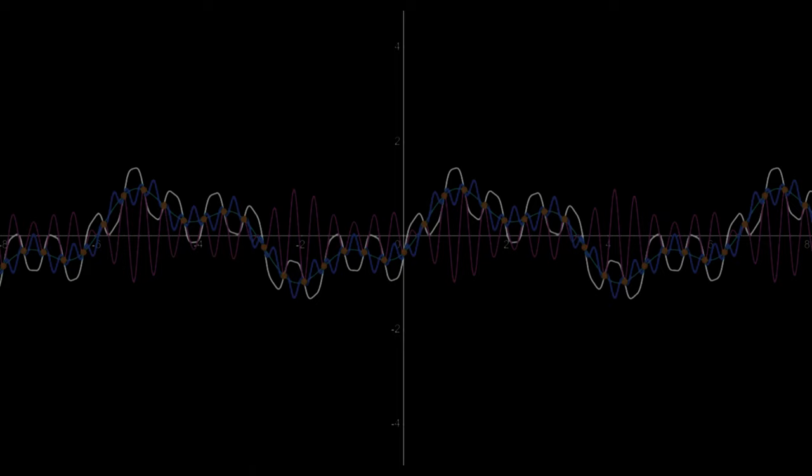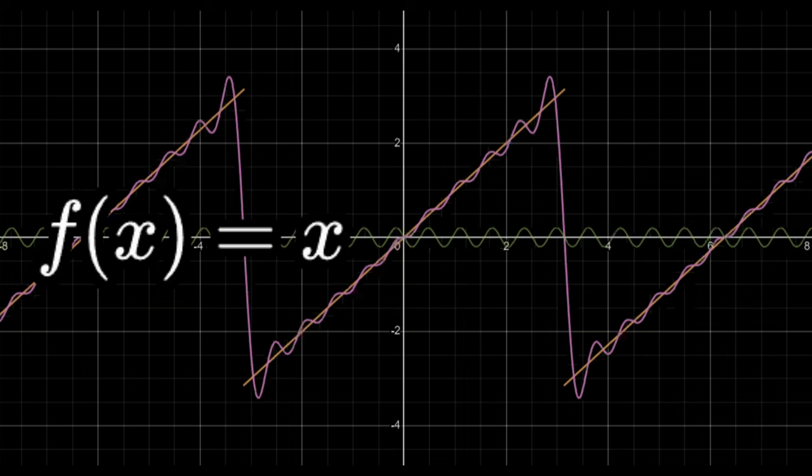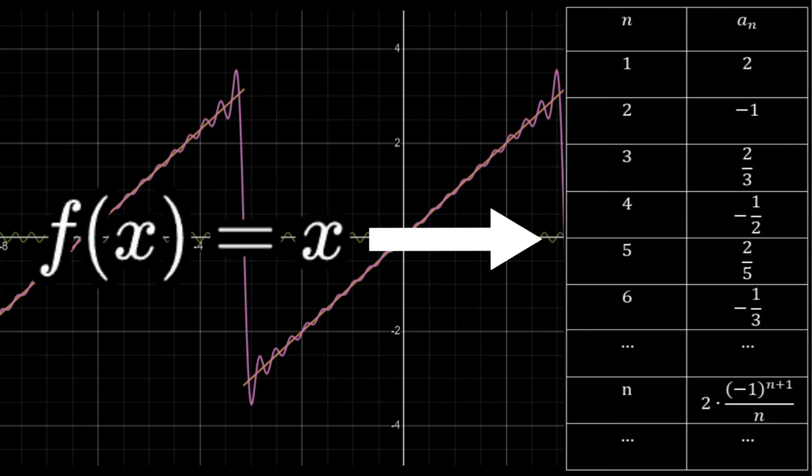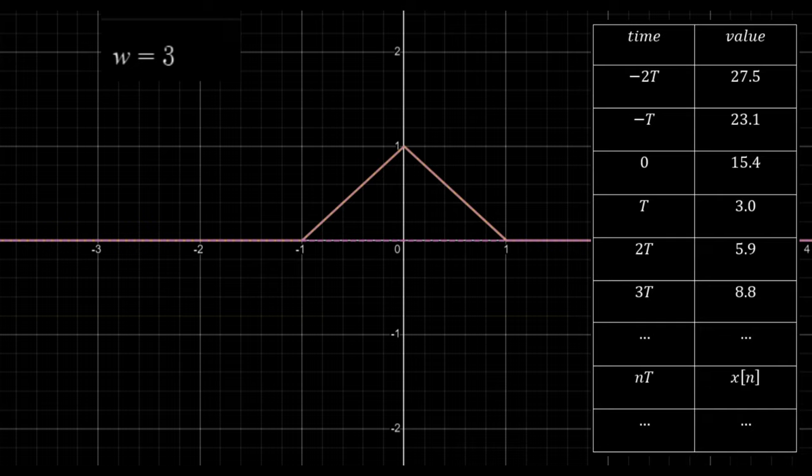Joseph Fourier proved that in order to describe a continuous function in a finite segment of time, you only need discrete coefficients in the frequency domain, which means that every function is uniquely described by its Fourier coefficients. What we've done here is using this proof in the opposite direction. We've shown that every function of frequencies in a finite segment of frequencies, which is the Fourier transform, is uniquely described by discrete coefficients in the time domain, which is the sampled signal.